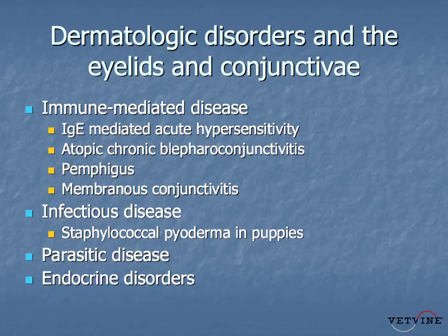Disorders of the eyelids and conjunctiva may be associated with systemic disease. Regarding chronic red eyes and their association with allergic responses, in recent years I've started to take dogs with chronic red eyes and low-level conjunctivitis and send them off for skin testing. And indeed, a lot of these mild chronic conjunctivitis cases are associated with allergies and can be managed effectively as such.